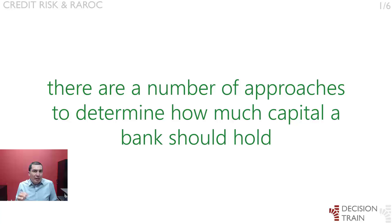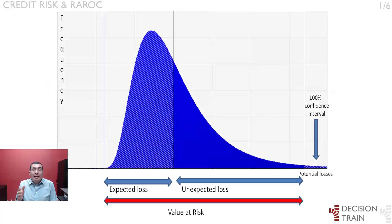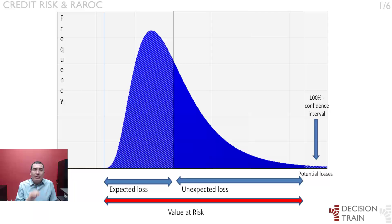There are a number of approaches to determining how much capital a bank should hold. The IRB approach adopted for Basel II focuses on the frequency of bank insolvencies arising from credit losses that supervisors are willing to accept. By means of a stochastic credit portfolio model, it is possible to estimate the amount of loss which will be exceeded with a small, predefined probability. This probability can be considered the probability of bank insolvency. Capital is set to ensure that unexpected losses will exceed this level of capital with only this very low fixed probability.